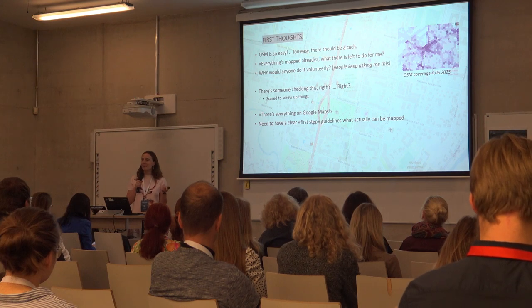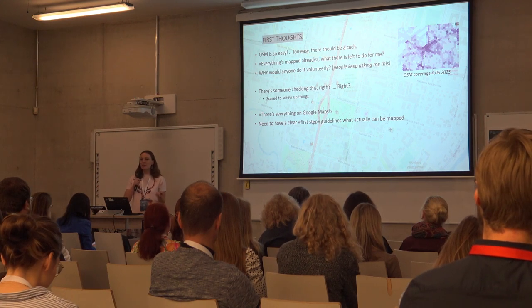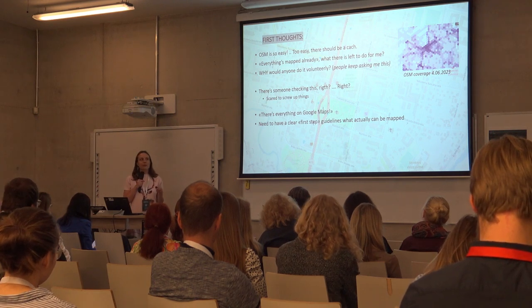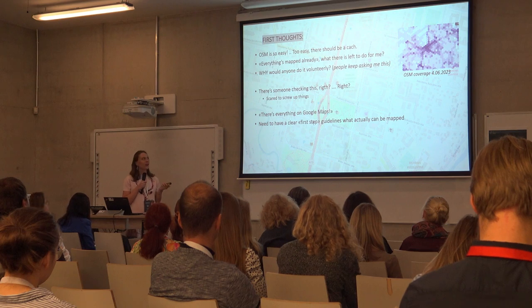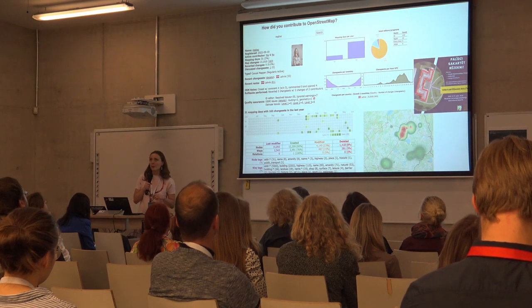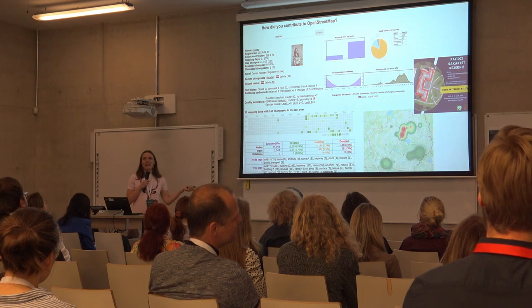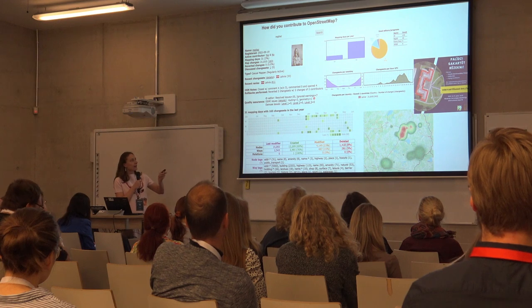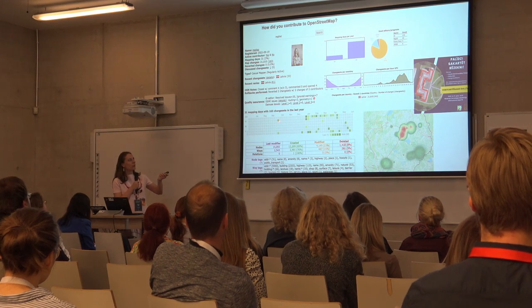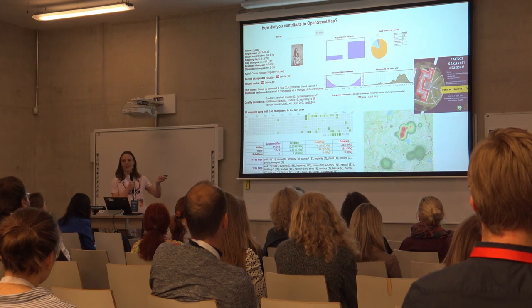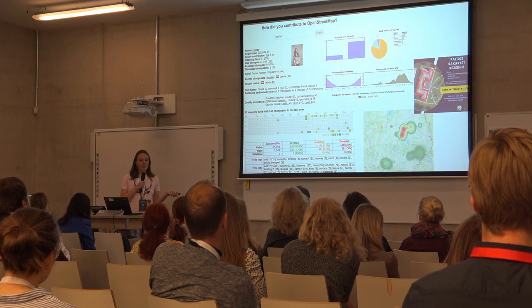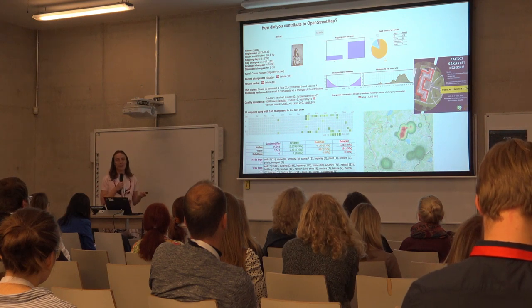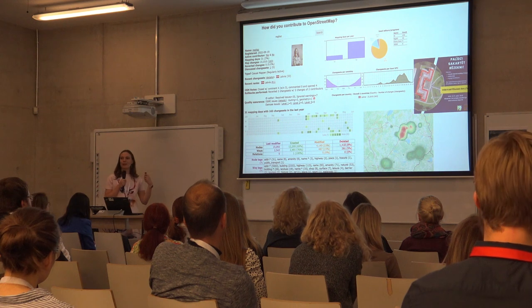I understood there is a huge need for clear first steps or guidelines about what can actually be mapped. For professionals it might feel obvious, but for me starting off, I had no idea. You can see it on my profile too — if you open the statistical overview of my contributions, I started after that tweet somewhere in September, and then I dropped off. It's really easy to start, but the thing is to become a regular mapper and to actually keep mapping.